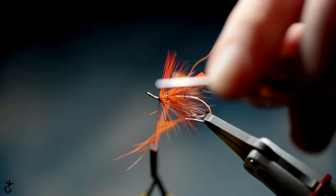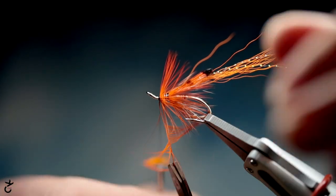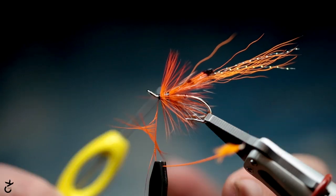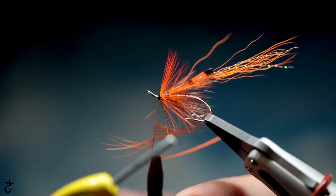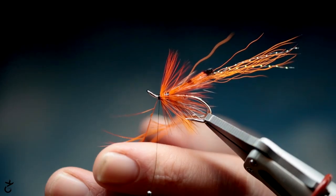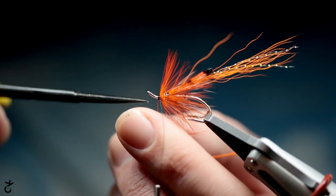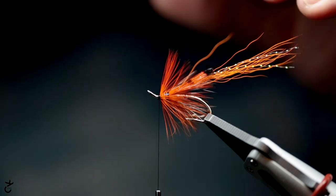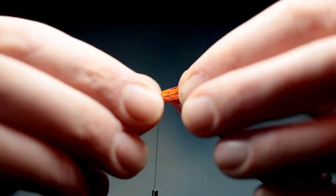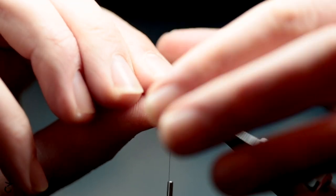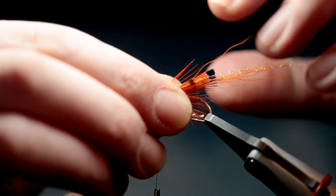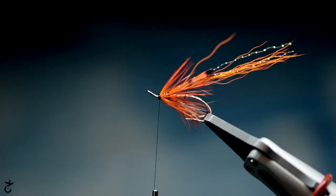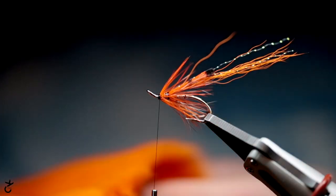I possibly could have left a little bit more space at the head, but I've been making quite a few of these today and I've managed to finish it off without going into the eye of the hook. Just ease them back a little bit to give you that nice taper, give you what it looks like in the water a little bit more.